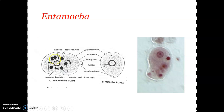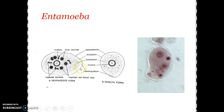The trophozoite is an active feeding form which is pathogenic to man. It resembles an Amoeba in all structural details — you can see a single nucleus, cytoplasm, plasmalemma, ectoplasm, and endoplasm. The cytoplasm is differentiated as outer ectoplasm and inner endoplasm. The ectoplasm is clear, non-granular, and hyaline in nature, while the endoplasm is granular and fluid-like.